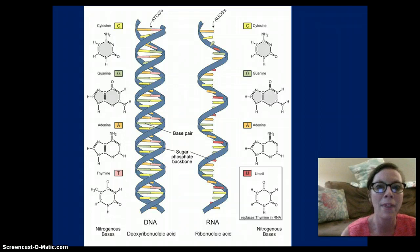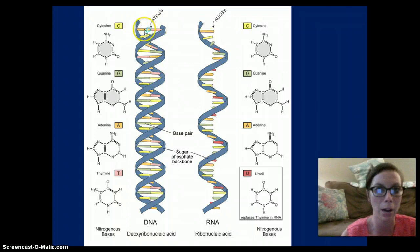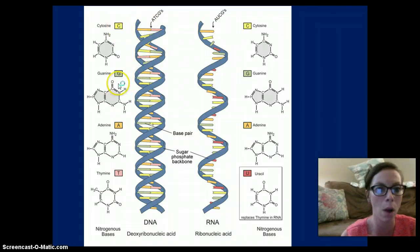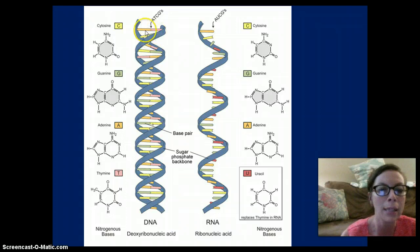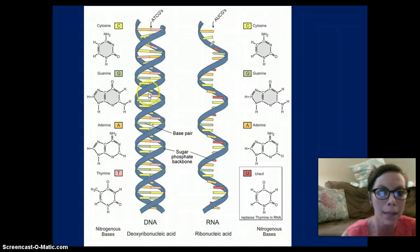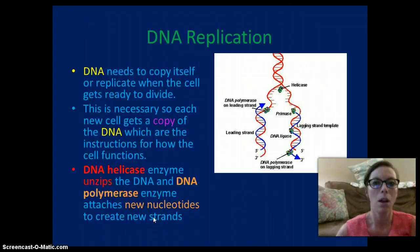DNA has base pairs — cytosine always pairs with guanine, and adenine always pairs with thymine. This has to do with the shape of the molecule. So always A with T and C with G. Where these bases pair together, they are held together by hydrogen bonds.